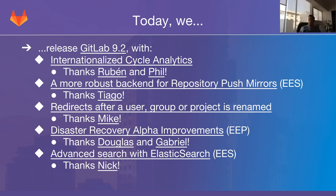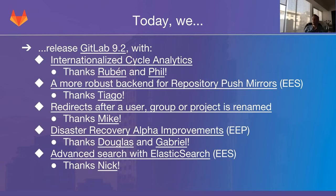Fourth, we have a number of disaster recovery UI improvements, with behind-the-scenes changes as well. Disaster recovery is a feature of GitLab Geo, an Enterprise Edition Premium feature, and we are working hard to make it a solution customers can depend on. We make improvements every month — click the link to find out exactly what changed. Thanks Douglas and Gabriel for working on that.